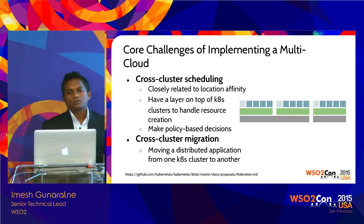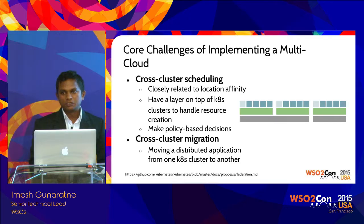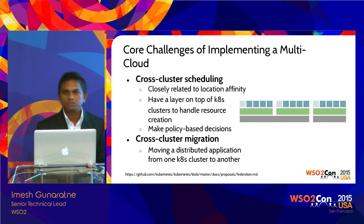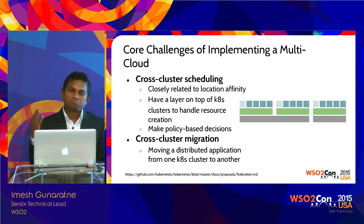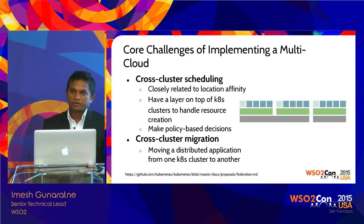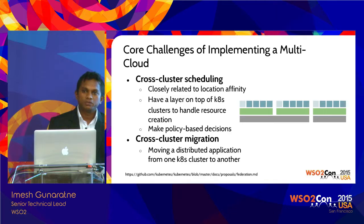For cross-cluster scheduling, you might need to tell Kubernetes: I have three Kubernetes clusters — where should my cluster be deployed? Should the same set of pods span across three clusters, or should they scale up when load is high? For cross-cluster migration, if one cluster goes down, all containers in that cluster might need to be migrated to another cluster for auto-healing purposes.